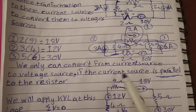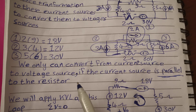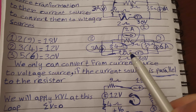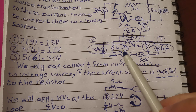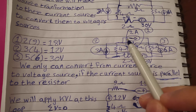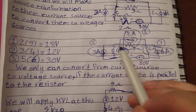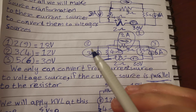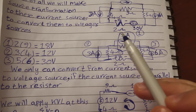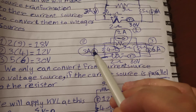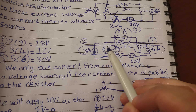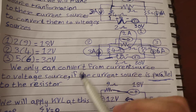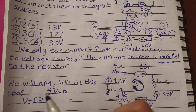We can only convert from a current source to a voltage source if the current source is in parallel with a resistor. That is the only condition required to perform this source transformation.